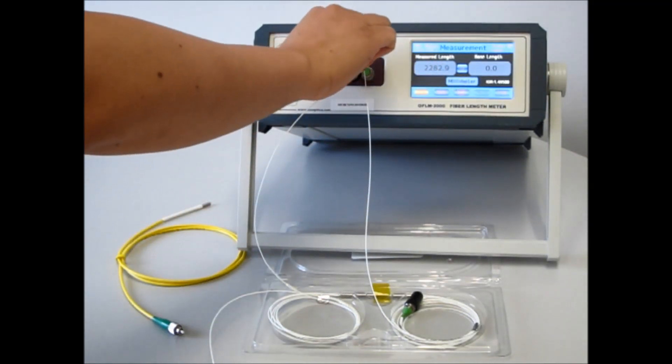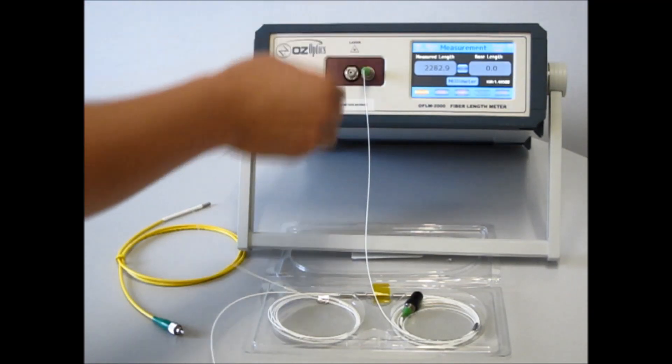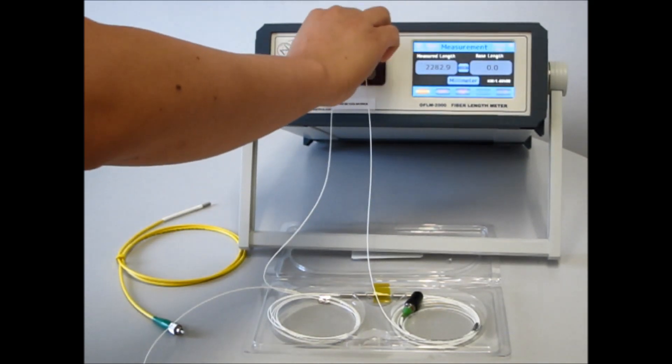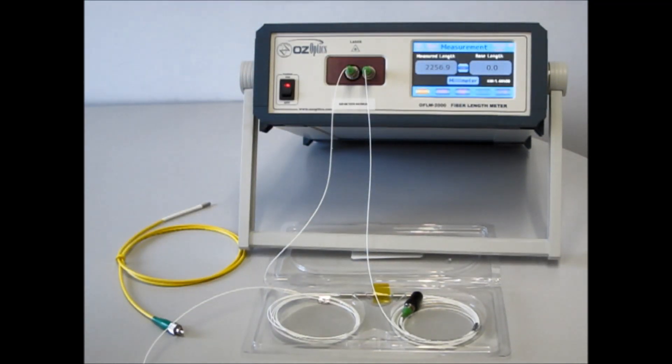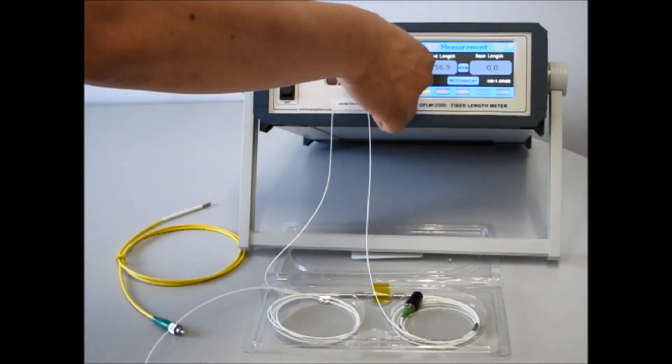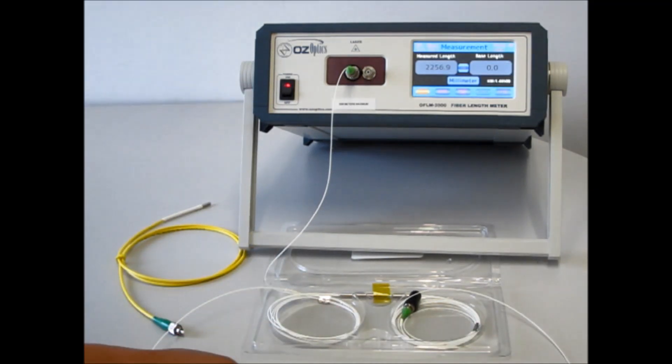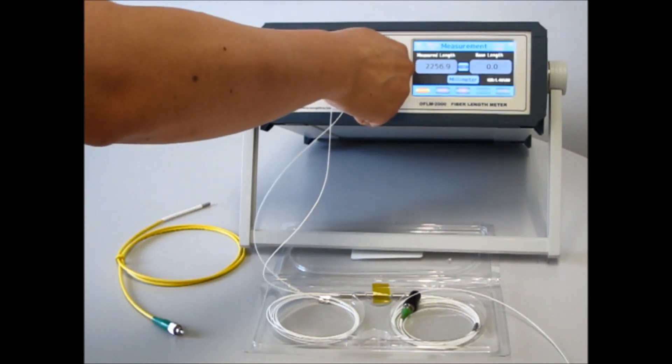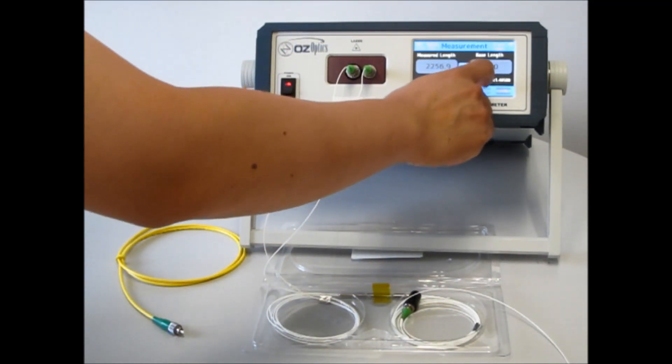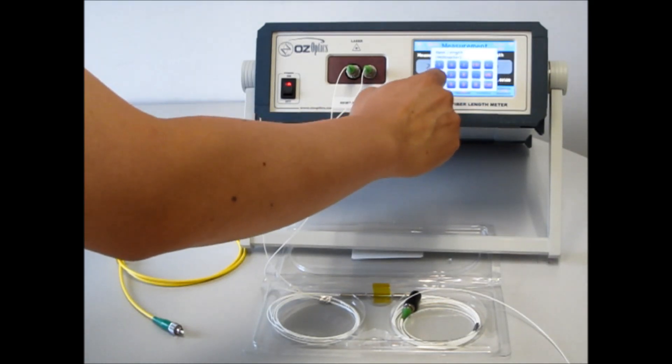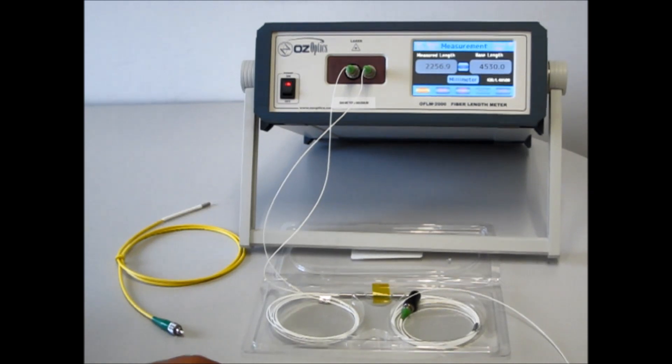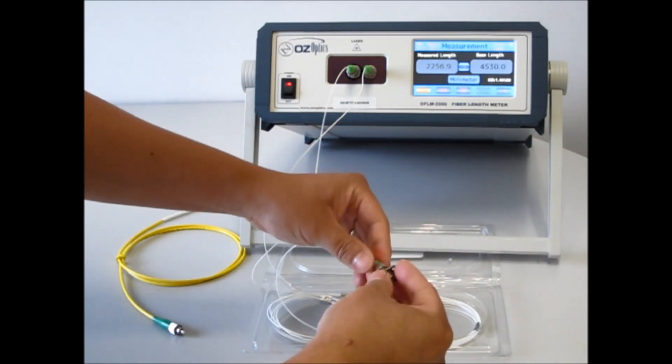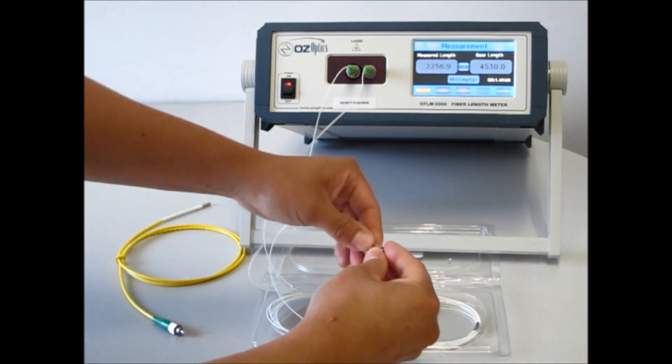And now we're going to measure the length of the return path. Add these two lengths together to get the total length of the fiber added due to the splitter. Now return both ports back into the fiber length meter. Now we can manually type in the base length of about 4.5 meters. Okay. And add a mating sleeve to the end. And now you have a calibrated one-port fiber length meter.